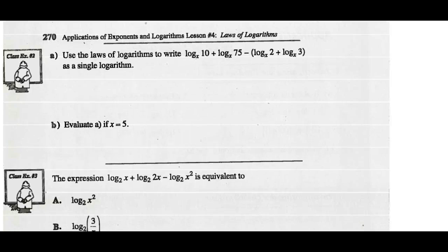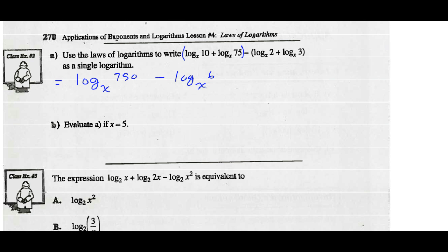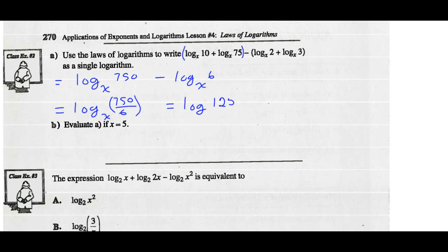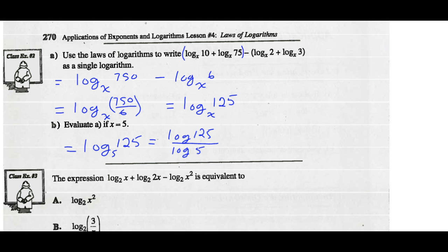Use the laws of logarithms to write this expression as a single logarithm. Putting the first bracket together, I've got log base x of 10 times 75, or 750. Minus the other bracket: log base x of 2 times 3, which is 6. Now I'm subtracting two logarithms, so I write that as a single log using division: 750 divided by 6, base x. In simplest terms, that's the log of 125 base x. Now evaluate it if x equals 5: log of 125 base 5 — common log 125 divided by common log 5 — gives us 3.